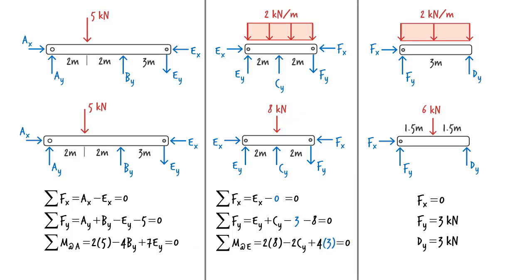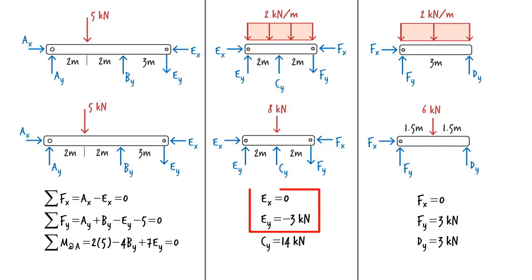Solving them for C_Y, E_Y, and E_X, we get these values. Substituting zero for E_X and negative three for E_Y here, we get these simplified equations, which we can use to determine B_Y, A_Y, and A_X.